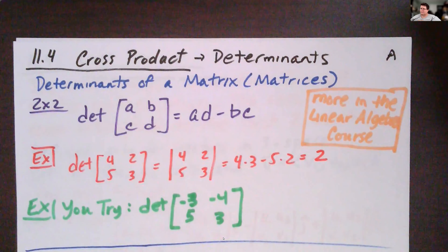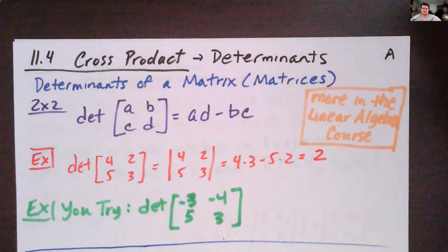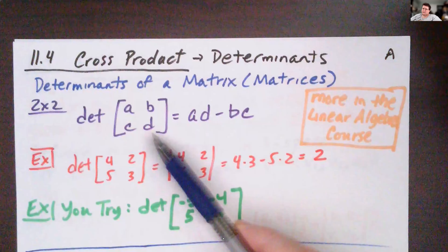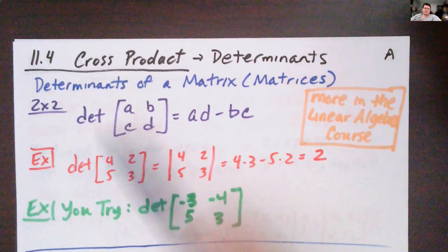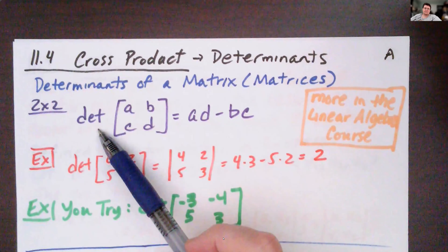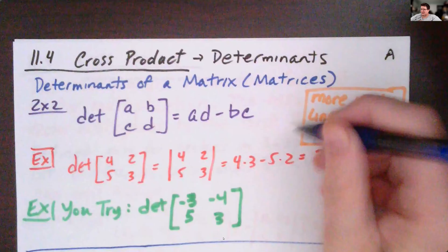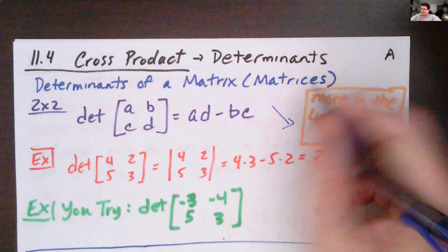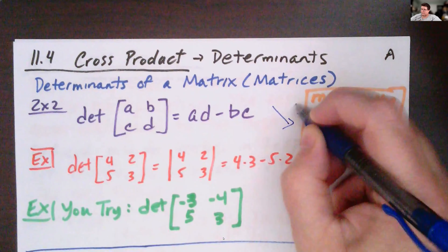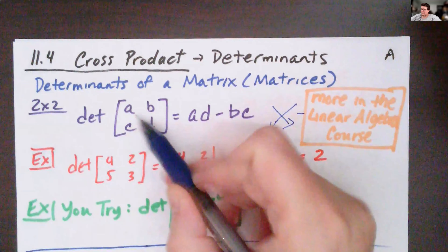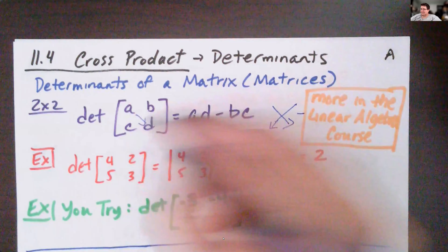The determinant of a matrix — plural form of matrix is matrices. If we look at the two by two form, a matrix comes with A, B, C, D. The determinant is usually written as DET in front of it. What you're doing is multiplying this diagonal and then subtracting that diagonal, so AD minus BC.